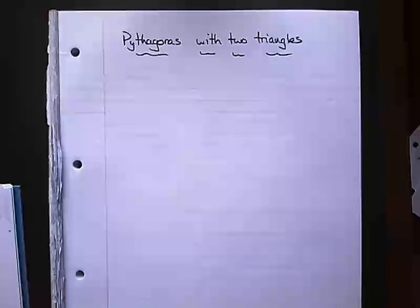Hi there. Right, what we're going to look at today is using Pythagoras where we have two triangles connected, where they're both right angle triangles. So the way we do this is by using Pythagoras twice. So here's an example to show you how to do it.